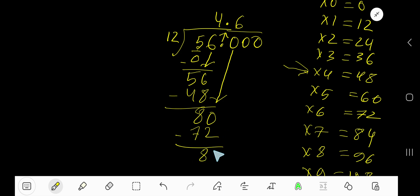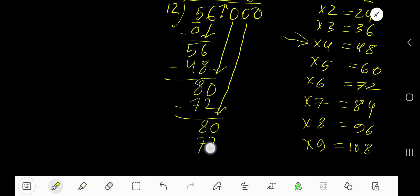Bring down the next digit. 12 goes into 80, 6 times. 6 times 12, again 72. Subtract, 80. Bring down next.